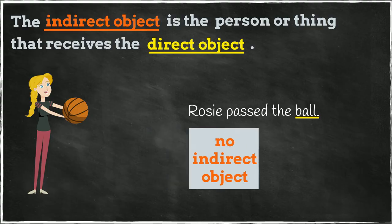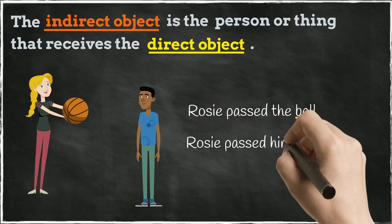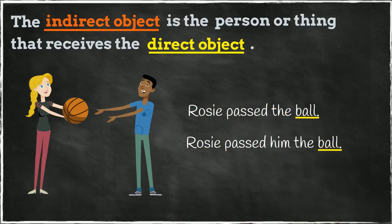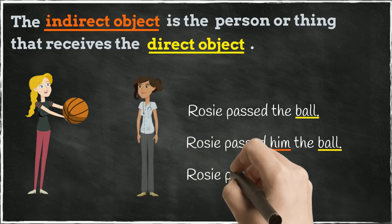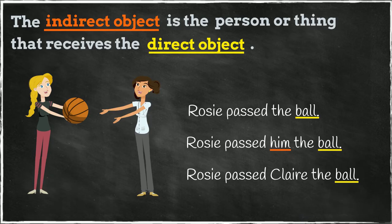Let's add an indirect object. Rosie passed him the ball. Can you see who is receiving the direct object? The indirect object here is him. Or, Rosie passed Claire the ball. The indirect object here is Claire.